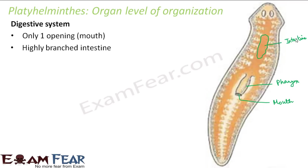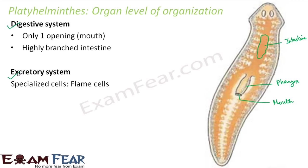Talking about the excretory system — for excretion, they have specialized cells known as flame cells. These flame cells help in removal of waste products from the body. If you look at the organism, you can see gray-colored canal-like structures — these are the excretory canals, and inside these excretory canals are present the flame cells.